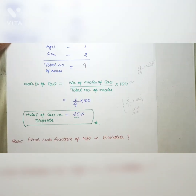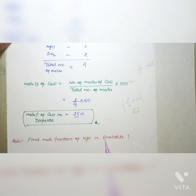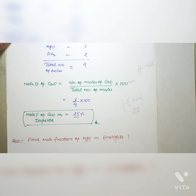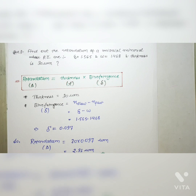Here is a practice question: find the mole fraction of MgO in enstatite. To solve this, write the formula of enstatite, break it down into oxides, and write down the number of moles of each oxide present. Then calculate the mole fraction for MgO. Comment below what the mole fraction of MgO in enstatite is.